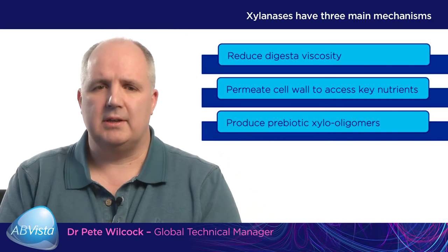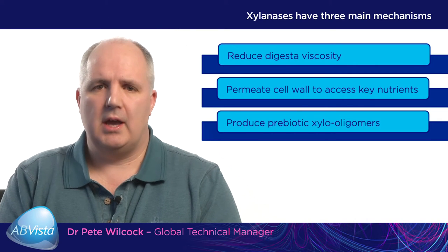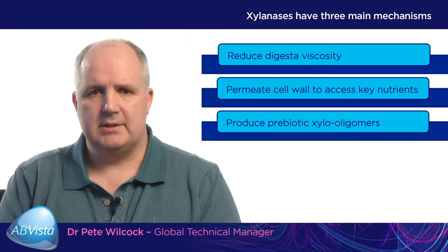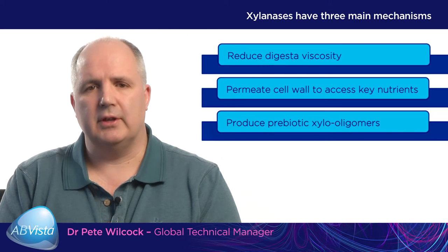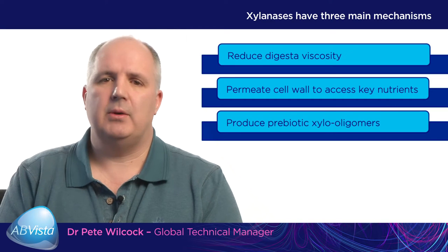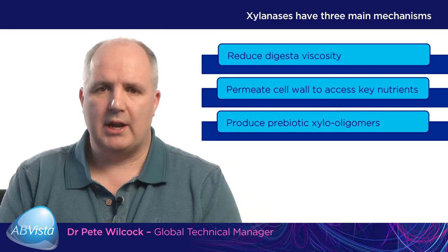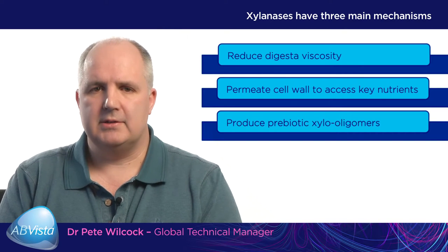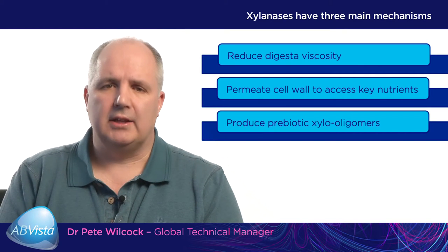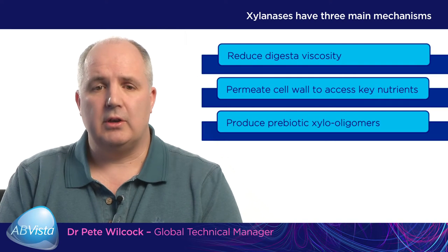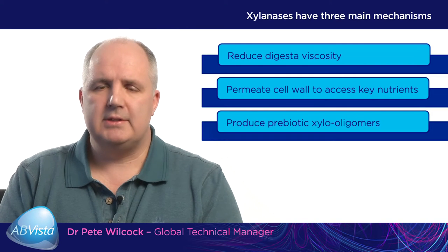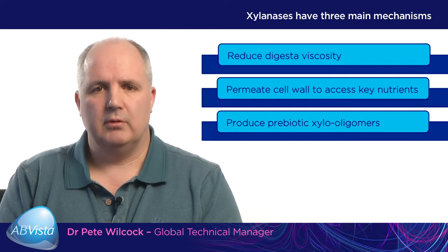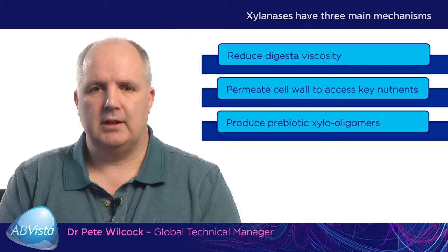The second mechanism is the ability of the xylanase to break down the insoluble arabinoxylans in the cell wall, effectively punching holes in the cell wall and allowing the endogenous enzymes of the animal to break down starch and protein within that plant cell wall. The third mechanism, which we're going to concentrate on, is the ability to produce prebiotic xylooligomers through the breakdown of long-chain arabinoxylans using a xylanase.